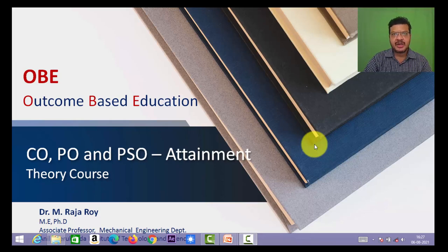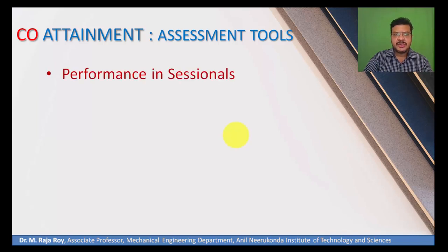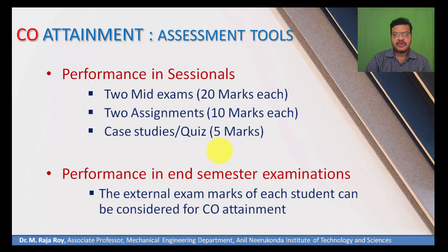Hello everyone, I am Dr. Raj Arvai. In this video, I am going to explain about CO, PO, and PSO attainment procedure for theory courses. CO attainment can be calculated by considering some assessment tools. The first assessment tool is performance in sessional mocks, and the second is performance in the end-semester examination — whatever marks the student secures for all COs in the end-semester exam.